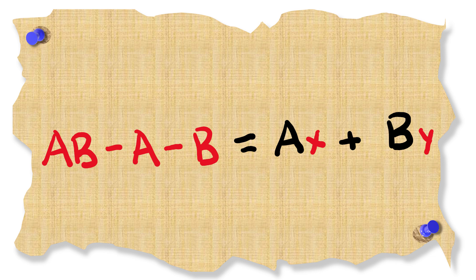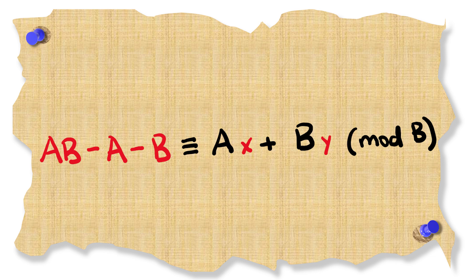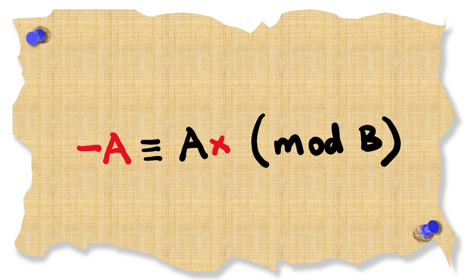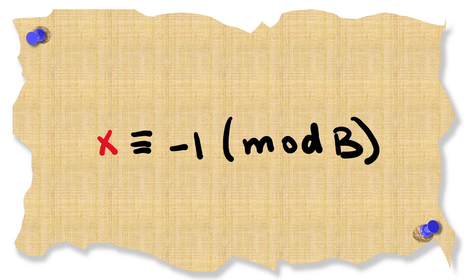Suppose it was possible that we had ab minus a minus b equals ax plus by. We can again use modular arithmetic on this taking modulo b. Then the terms containing b disappear and we get minus a is congruent to a times x modulo b which then becomes x is congruent to minus 1 modulo b.